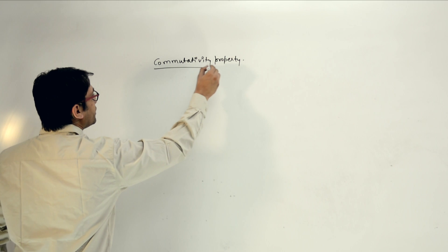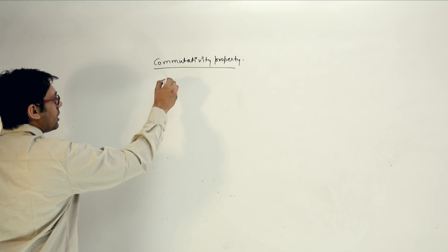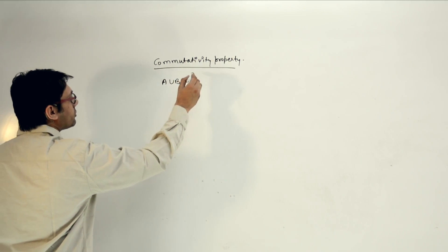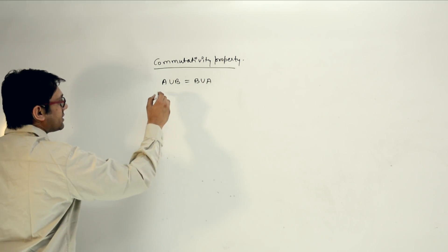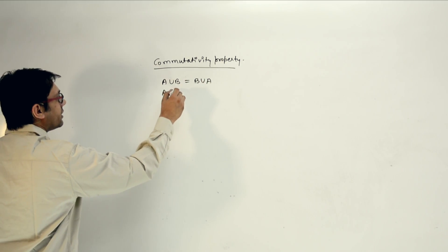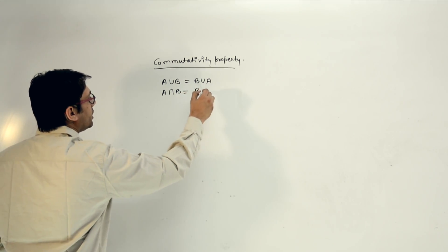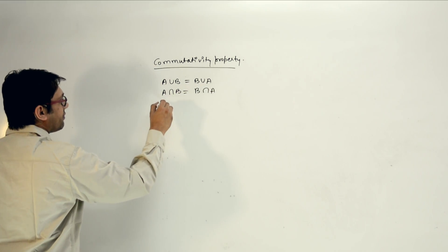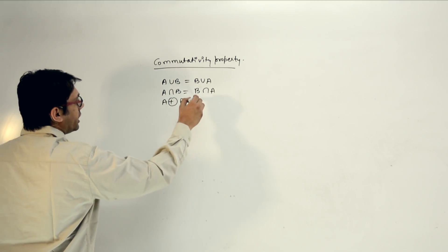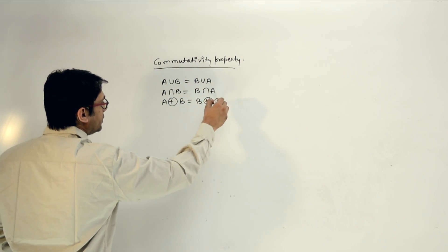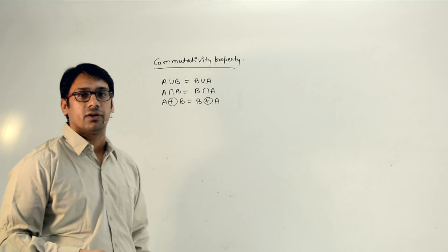What is the commutativity property? If we have A union B, then we can also write it as B union A. At the same time, if we have A intersection B, then we can also write it as B intersection A. And if we have A symmetric difference with B, then we can also write it as B symmetric difference with A. This looks very obvious to everyone.